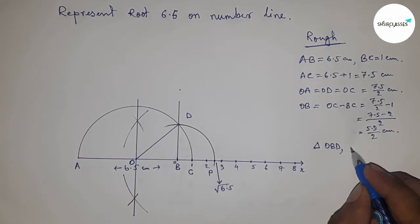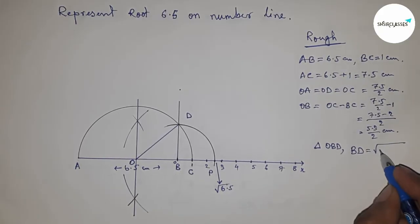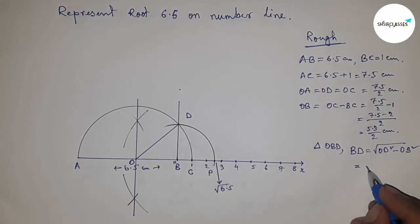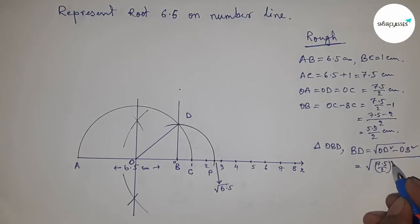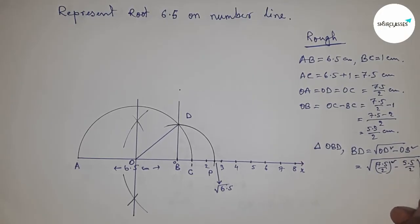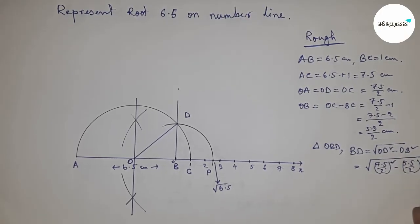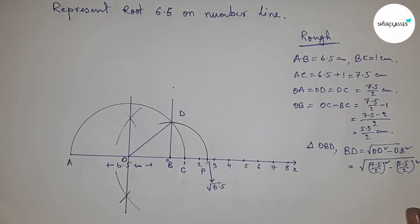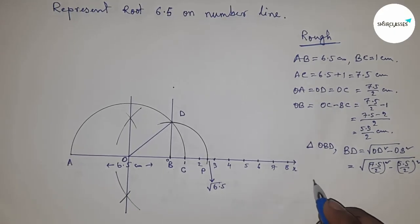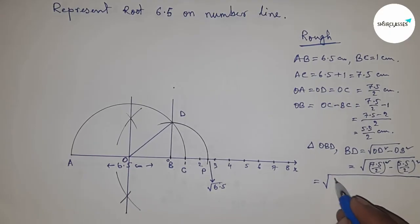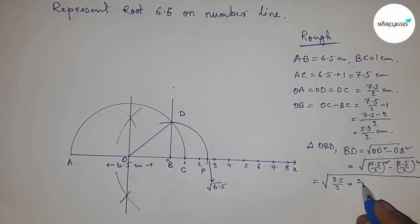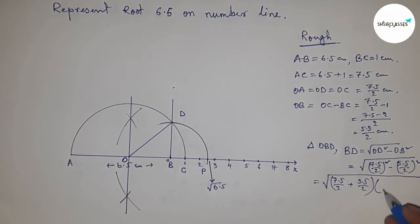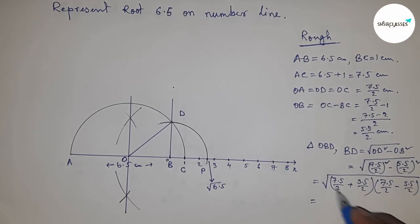we can write BD equals root of OD squared minus OB squared. Putting the values of OD and OB, now apply the formula a squared minus b squared equals (a plus b)(a minus b). From this, 13 by 2 and 2 by 2, so this is root 6.5 centimeters.